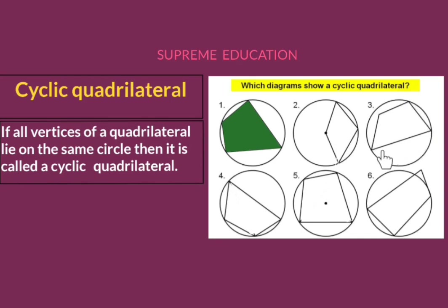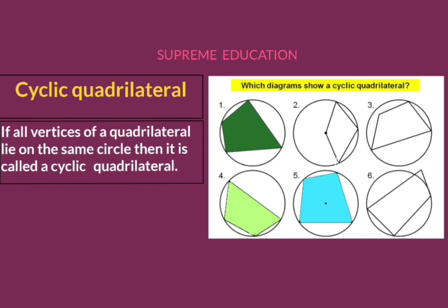In diagram number three, also only three vertices lie on the circle and the fourth one doesn't, hence this one is also not a cyclic quadrilateral. In diagram number four, all four vertices lie on the same circle, so this one is a cyclic quadrilateral. In diagram number five, all four vertices also lie on the same circle, hence this one is also a cyclic quadrilateral.